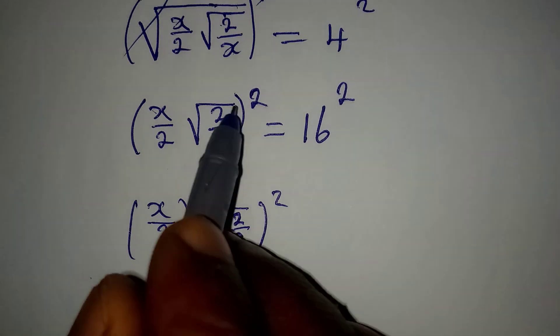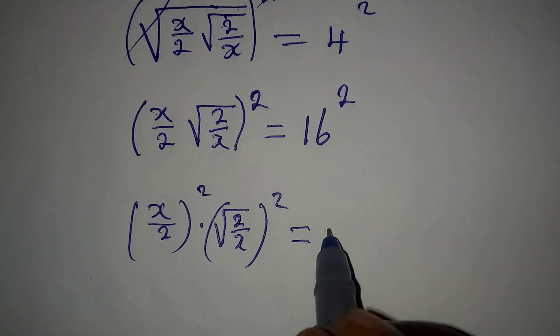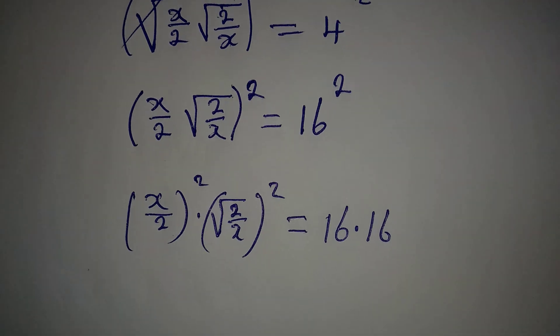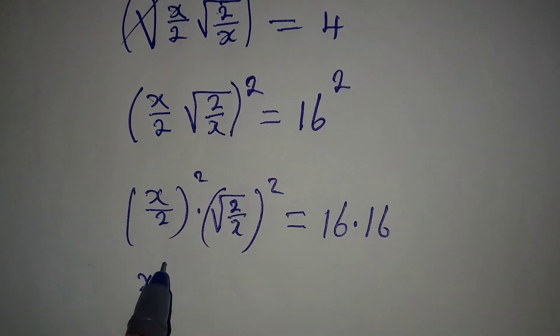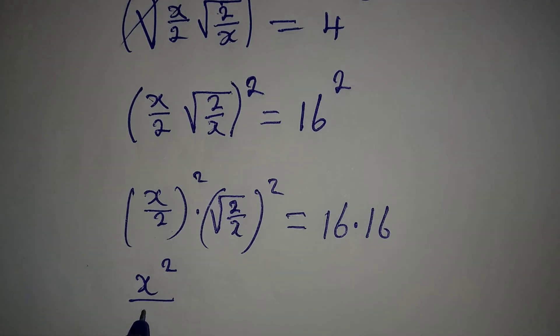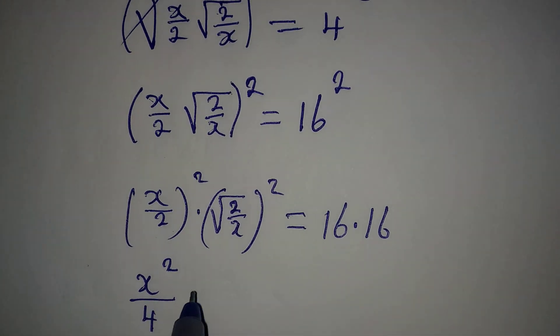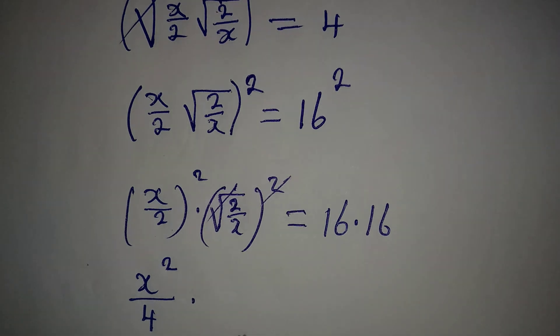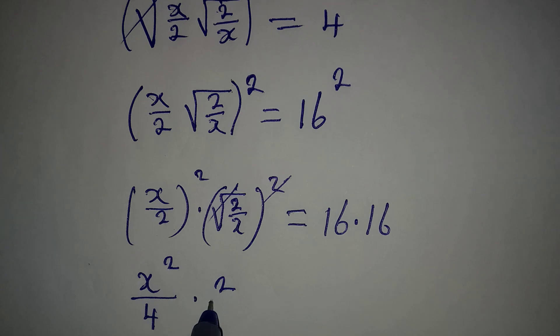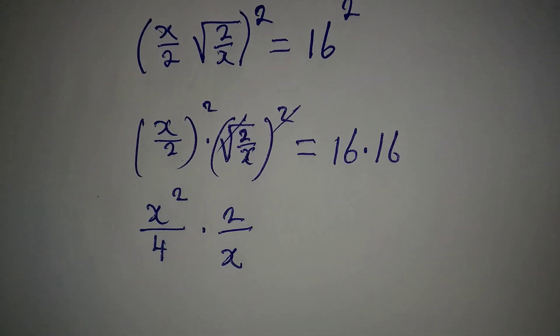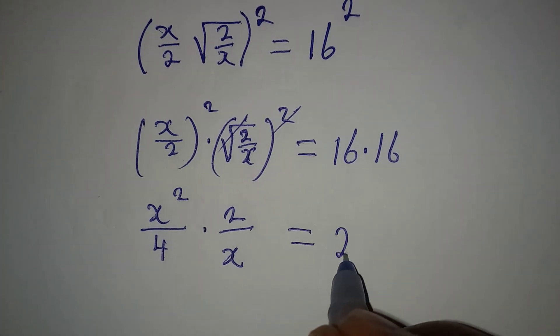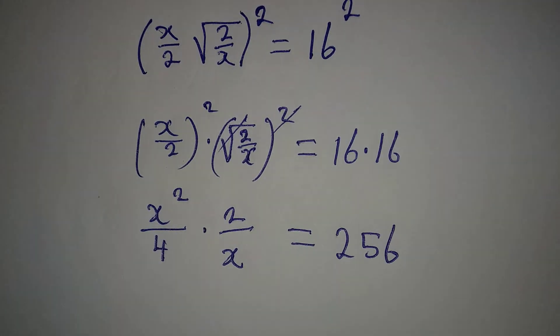And it is equal to 16 times 16. Now x squared is going to be here over 2 squared, which is 4, multiplied by this. And this will be gone, and then we shall have 2 over x. Remember this is x, and then the whole of this is equal to 256.